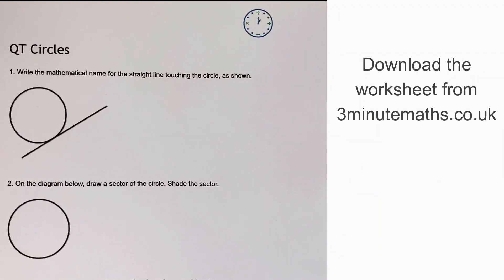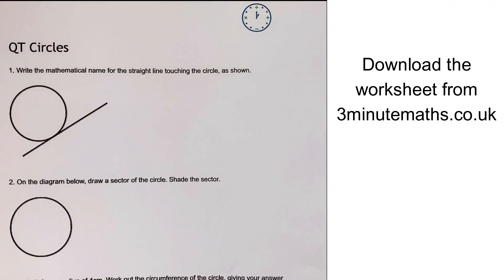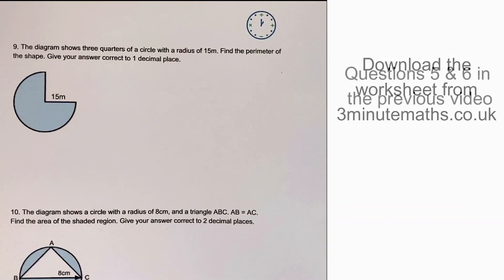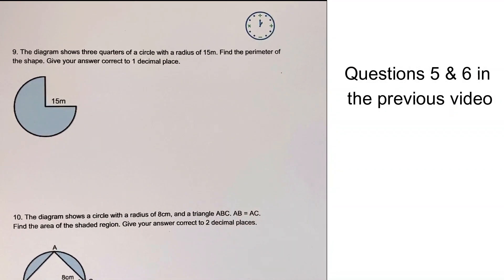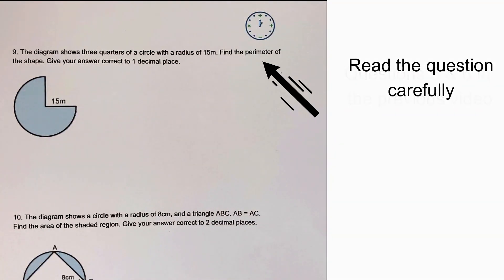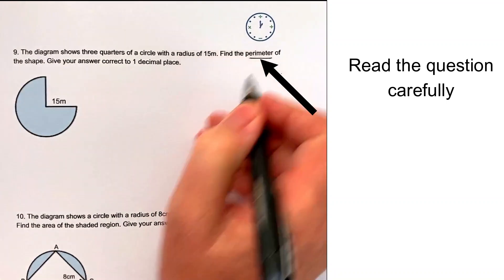So this particular question, we're looking at question number nine. Now, question number nine is slightly different because it's got this three-quarters of a circle shape, and we're being asked to find the whole perimeter of the shape.